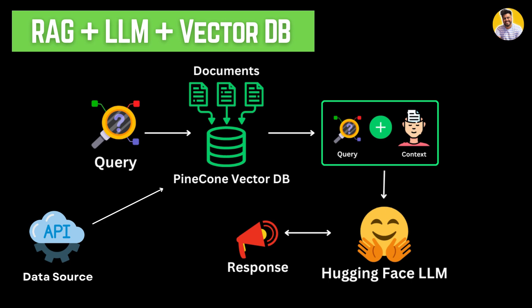First we get the data from an API or any open-source data source, pre-process it, and then store it in our Pinecone vector database. Then we use that external data with our large language model to generate the best response — that is enhanced with both the LLM's training knowledge and the external vector database knowledge.